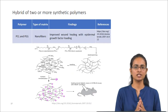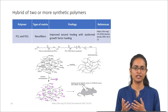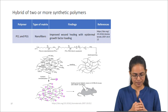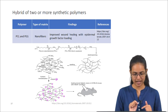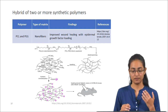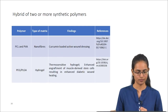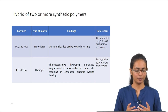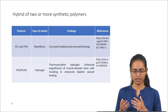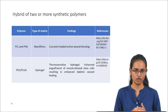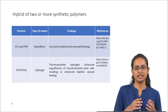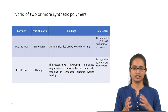Like natural polymers, two or more synthetic polymers have been blended to achieve better properties. A PCL and PEG block copolymer was synthesized and electrospun; free amino groups were used to attach epidermal growth factor, and in vivo studies showed improved wound healing. PCL and PEVA curcumin-loaded nanofibers also showed improved wound healing. A PEG and PLGA hydrogel was synthesized as a thermosensitive or environmentally responsive hydrogel, showing enhanced engraftment of muscle-derived stem cells seeded onto the grafts.